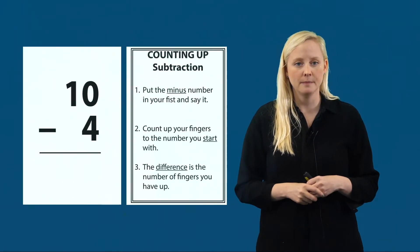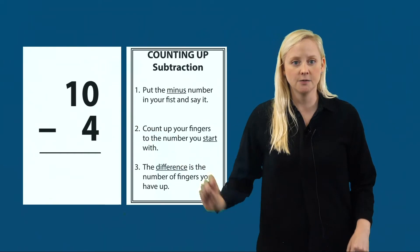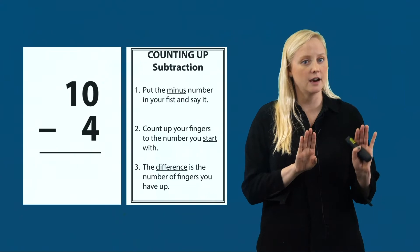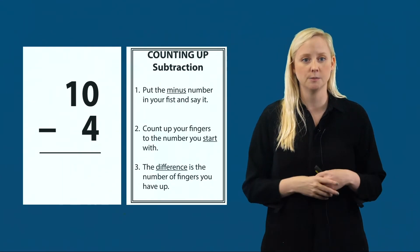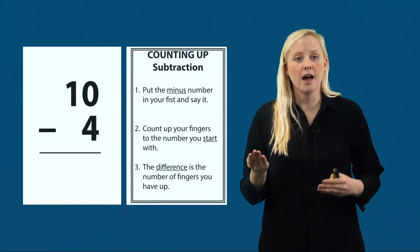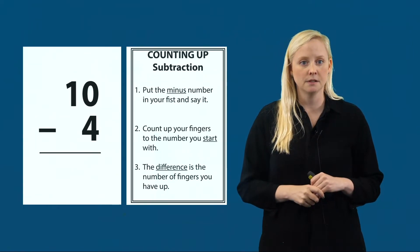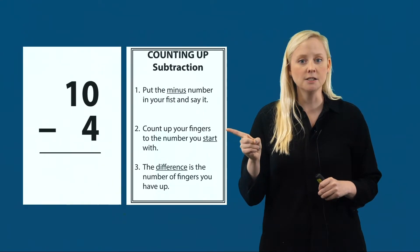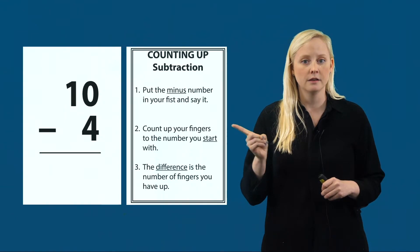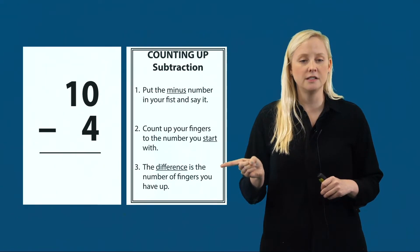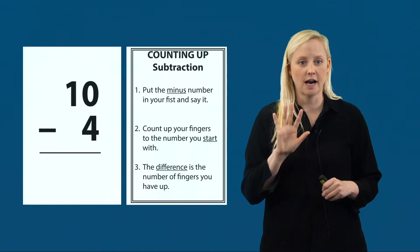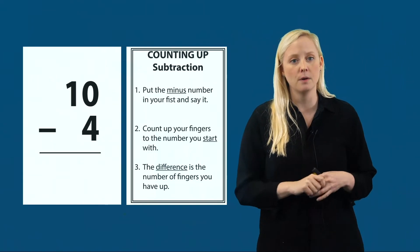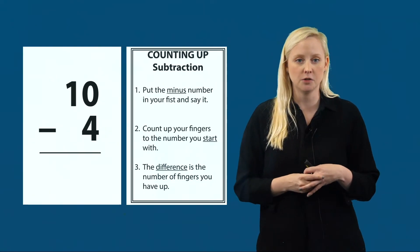Now let's look at a subtraction problem. We see ten minus four. We're going to use our counting up subtraction steps, which are just on the other side of our counting up addition steps. Just like counting up addition, counting up subtraction has three steps. First, put the minus number in your fist and say it. Next, count up to the number you start with. Then, the difference is the number of fingers I have up. Note that I use difference instead of answer because difference is formal math language for the result of a subtraction problem.